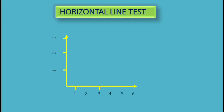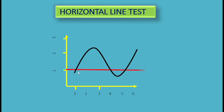Again, let's look at a coordinate axis with x-axis and y-axis. There is a curve representing a function. We apply a horizontal line, and the horizontal line is intersecting the curve at more than once. We apply another horizontal line — again, it meets the curve at more than once.